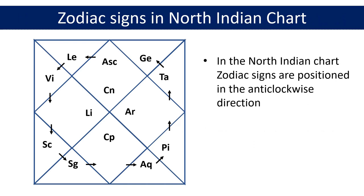I am highlighting the first zodiac sign Aries or Mesha in the chart, shown with the two letter abbreviation Aries. The Aries sign could also be represented with the zodiac symbol for Aries or the number 1. Moving anti-clockwise, the next sign is Taurus or Rishabha, shown by the two letter abbreviation TA next to the diamond shaped rectangle containing Aries or Mesha. Taurus could also be represented with the zodiac symbol for Taurus or the number 2. The same goes for the remaining ten zodiac signs or Rashis.